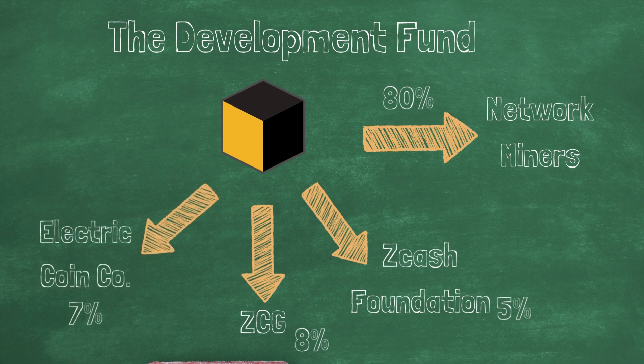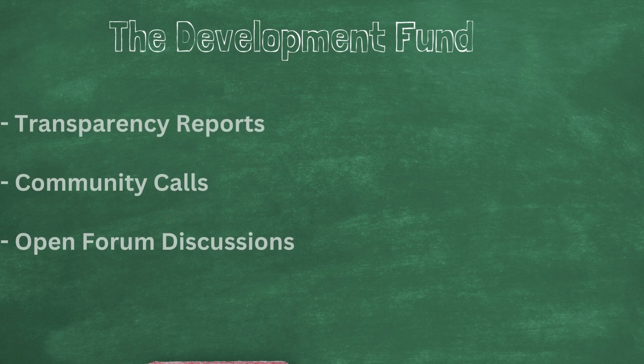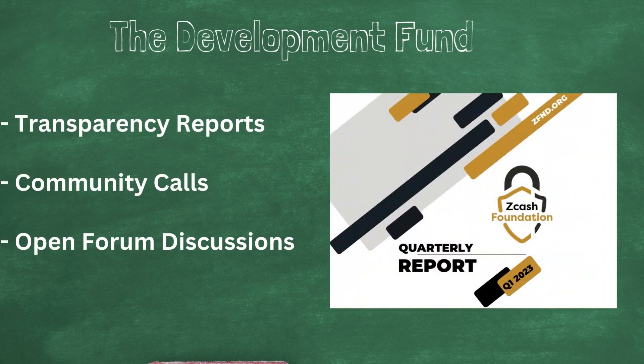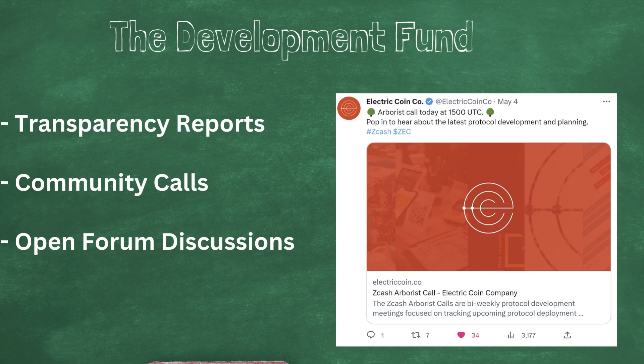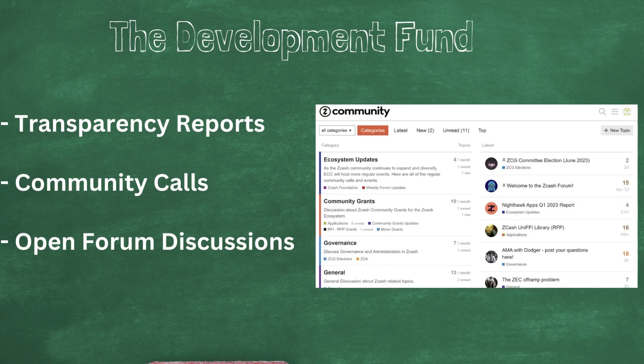The advantage of this system is that it enables Zcash to carry out development without the coercion or direction normally found in venture capitalist-funded projects. This design can also be altered at the protocol level at any time if decided upon by the community. The community itself gets insight into the organizations through quarterly transparency reports, bi-weekly community calls, and open forum discussions.